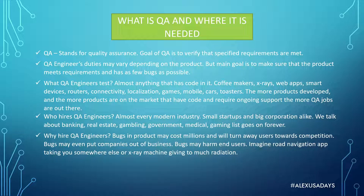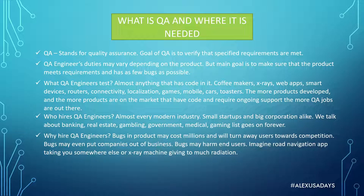Why hire QA engineers? Why not let developers test? The thing is, if developers knew where the bug was, they wouldn't have written the software to have that bug. Even in an ideal world, there are so many interactions happening — multiple developers working on a product, multiple tools being used — all these interactions between different modules and components cause the system to start breaking in ways that are hard to predict, even if developers write unit tests with some coverage.